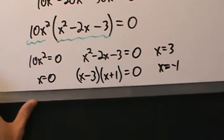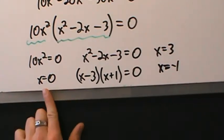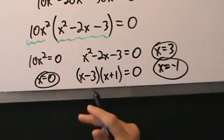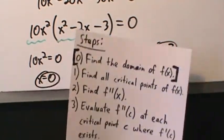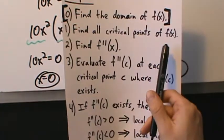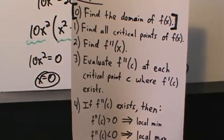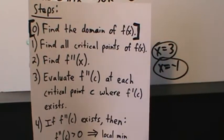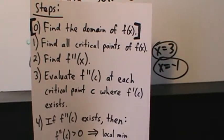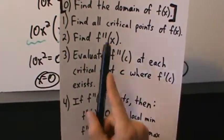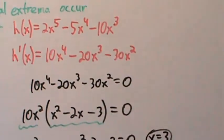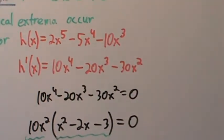So our critical points are x equals 0, 3, and negative 1. That's step one. So far it's the same as the first derivative test, but now instead of setting up a sign chart and evaluating the first derivative on intervals, we're going to find the second derivative, which for polynomials is usually pretty nice.